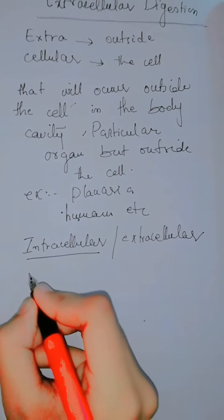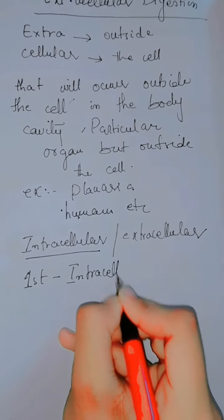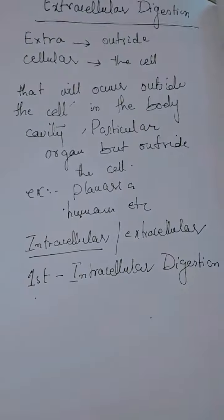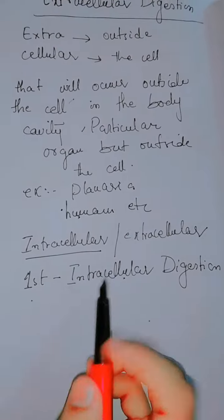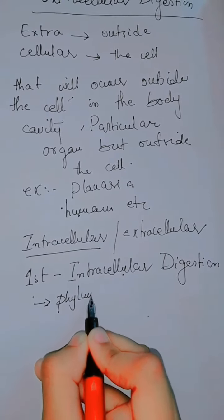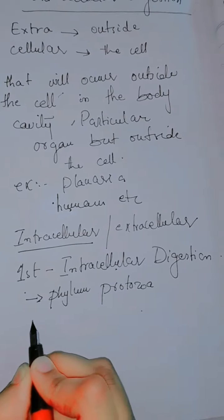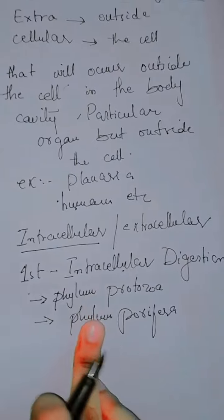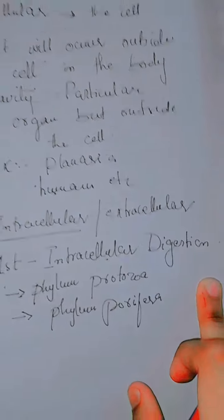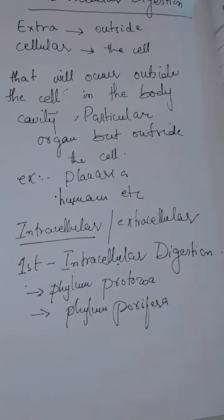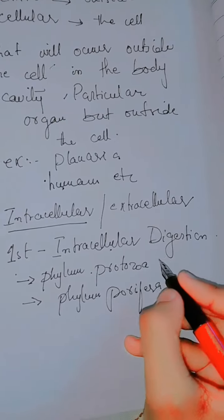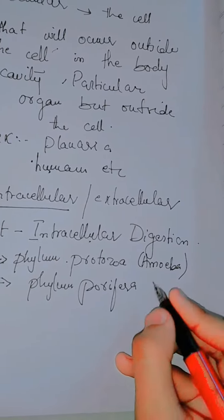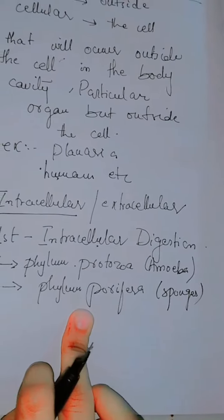First, talking about intracellular digestion — the first two phyla have intracellular digestion. The first phylum is Phylum Protozoa and the second is Phylum Porifera. Organisms in these two phyla have intracellular digestion. For example, Phylum Protozoa includes amoeba, and Phylum Porifera includes sponges.